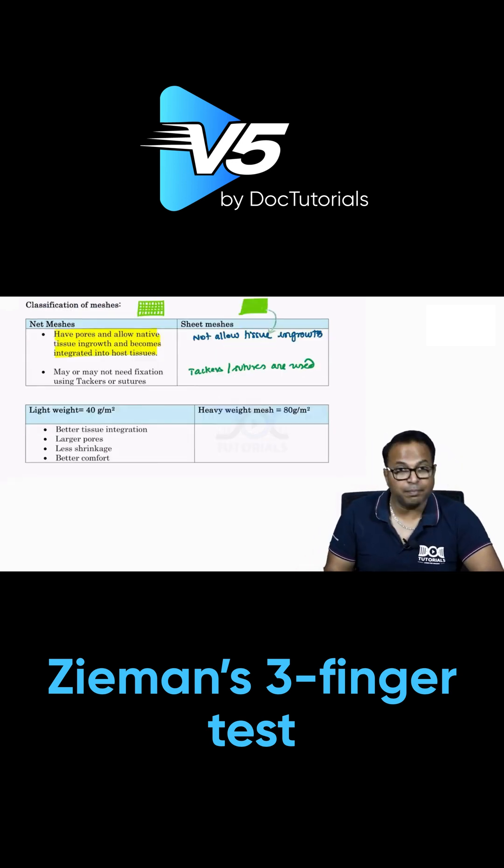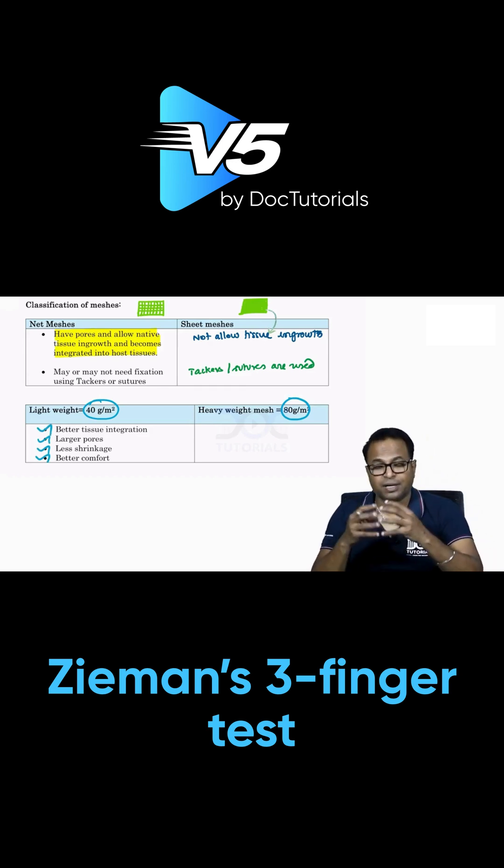Lightweight and heavyweight mesh: lightweight mesh is 40 grams per meter square, heavyweight mesh is 80 grams per meter square. Lightweight mesh has large pores, less shrinkage, better comfort, and better tissue integration.